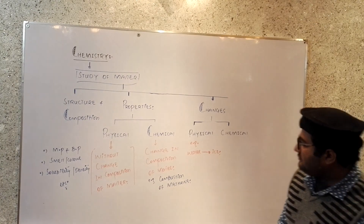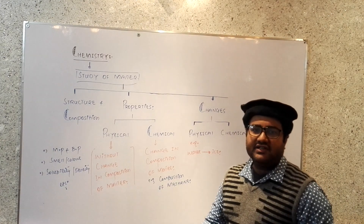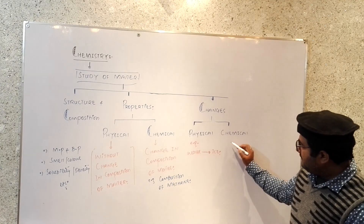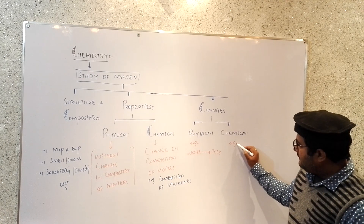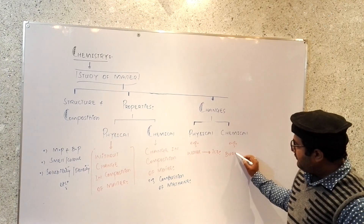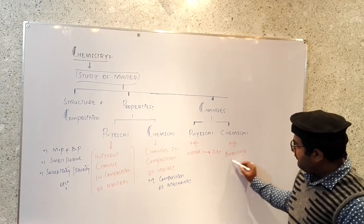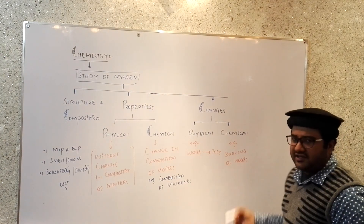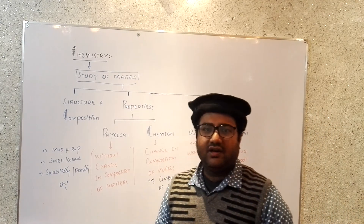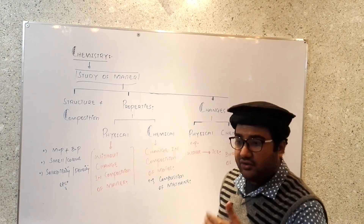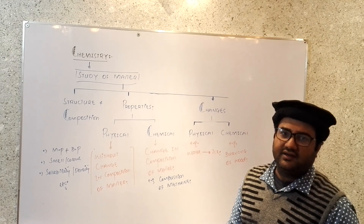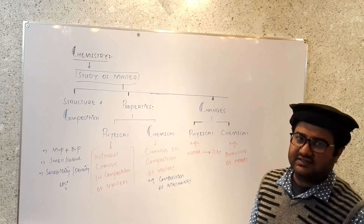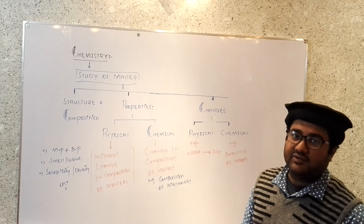Chemical changes are those changes in which a substance is changed into an entirely new substance. For example, burning of wood — you take wood and burn it, and the new substance formed, the ash, is totally different. Energy is also released, and the composition has totally changed. Such a change is called a chemical change.